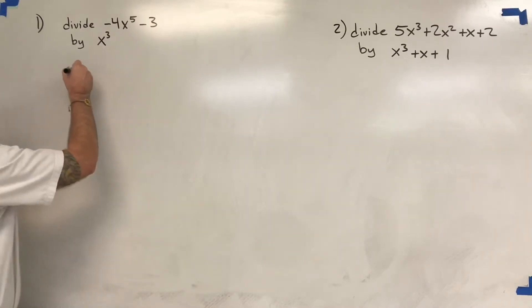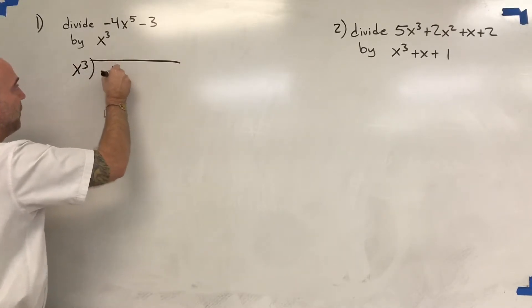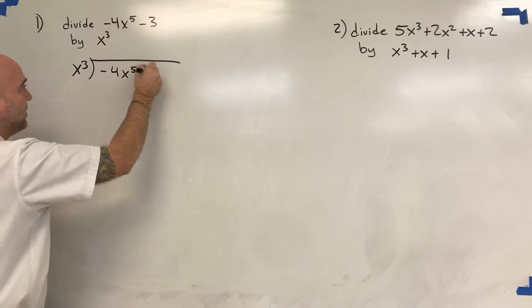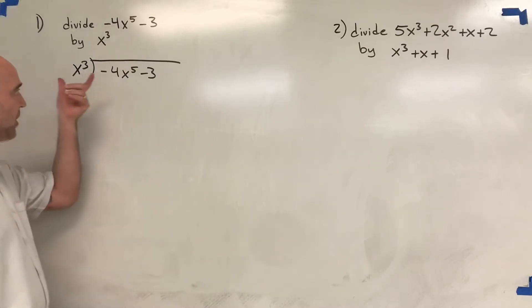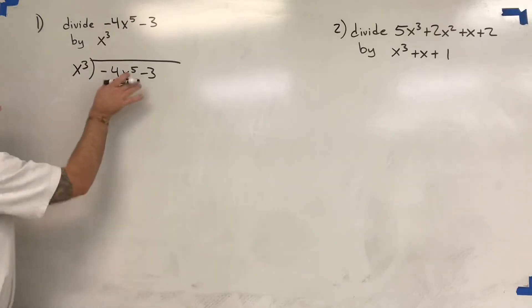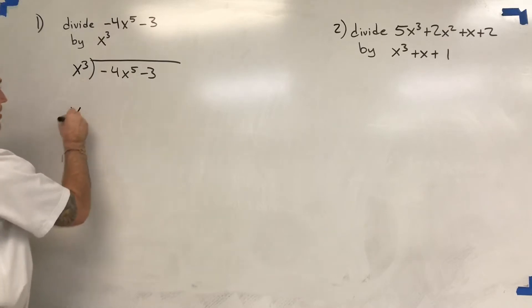So I set it up as a long division problem. x cubed is going into negative 4x to the 5th minus 3. Now, when I set these up, it's really important to have placeholders on these, placeholders on each part to kind of help us with that. So this is the one that really needs the placeholder so that we can divide into each part and see what happens. So I'll just rewrite it with the placeholders.